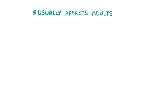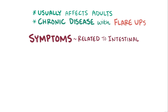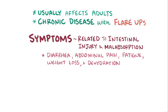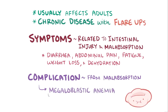Tropical sprue typically affects adults, and the usual pattern is of a chronic disease with exacerbations or flare-ups from time to time. The most common symptoms are related to intestinal injury and malabsorption, and are diarrhea, abdominal pain, fatigue, weight loss, and dehydration. One complication that can result from malabsorption of vitamins like folate and vitamin B12 is megaloblastic anemia, where the bone marrow produces large, immature red blood cells.